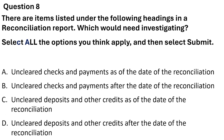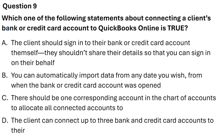Question 8: Which items listed in a reconciliation report both need investigation? Options: A) Unclear checks and payments as of the date of reconciliation. B) Unclear checks and payments after the date of reconciliation. C) Unclear deposits and other credits as of the date of reconciliation. D) Unclear deposits and other credits after the date of reconciliation. The correct answers are A and C: unclear checks and payments as of the date of reconciliation, and unclear deposits and other credits as of the date of reconciliation.